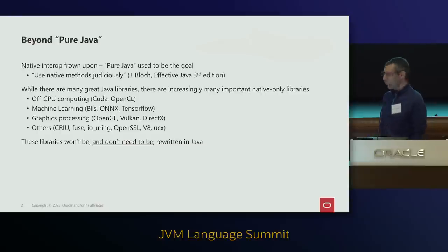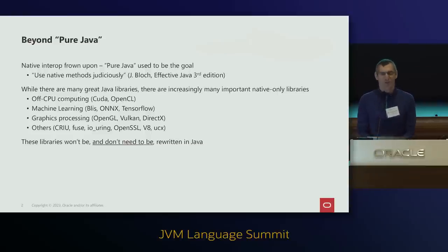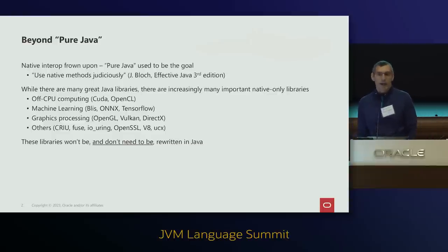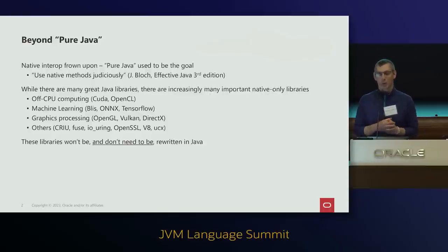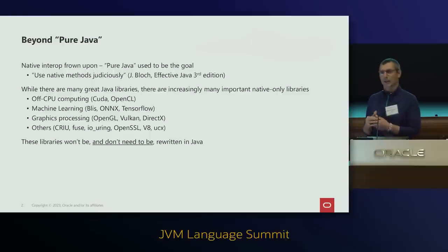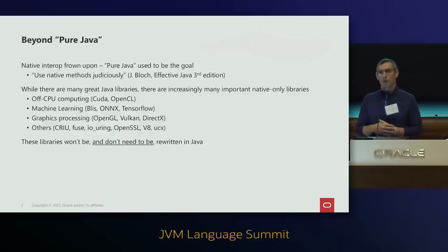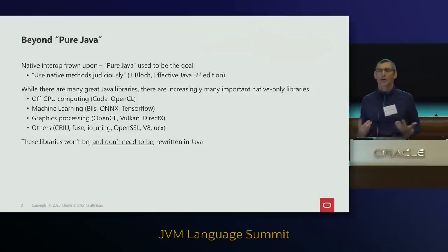Why are we trying to do this? Applications used to be written in pure Java code — using native libraries was actively discouraged by some of the most famous Java books. But there are many great libraries today that are not written in Java that you may want to use for the most exotic things, like interacting with a GPU or running JavaScript via v8. The best thing we can do in Java is to facilitate the way developers can access such libraries.